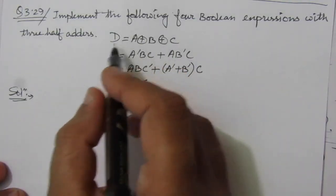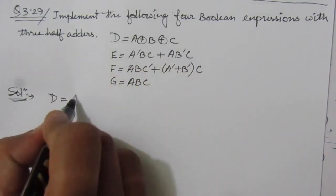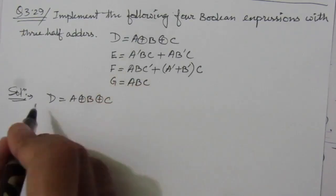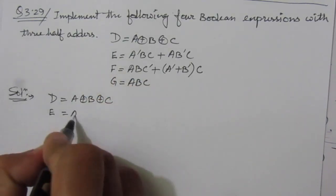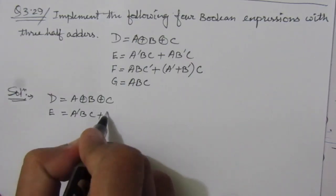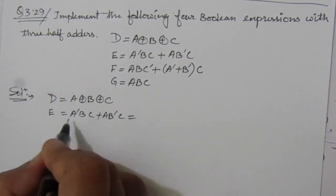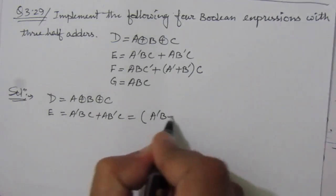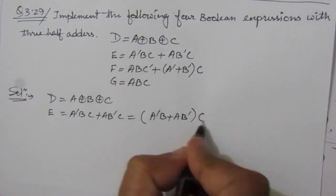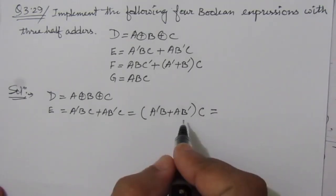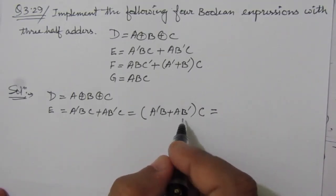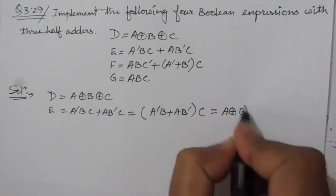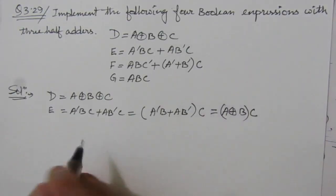First, D is given as D = A XOR B XOR C. Then E is given as E = A'BC + AB'C. If we take C as common, we get (A'B + AB')·C. We can see that A'B + AB' is nothing but the XOR operation, so we can write it as (A XOR B)·C. This is one simplified expression.